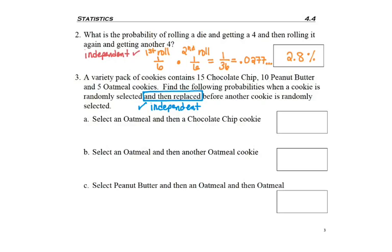Question 3a: We want to select an oatmeal cookie, put it back, and then pick a chocolate chip. The probability of an oatmeal cookie: five of the total 30 cookies listed were oatmeal. Be sure to count up the 15 chocolate plus the 10 peanut butter plus the five oatmeal gives us 30 total cookies. Because we have 'and then' for independent events, that second cookie probability will get multiplied with the first. Fifteen of the cookies were chocolate chip, and so as I multiply across, I'll get 75 over 900, for 8.3 percent.